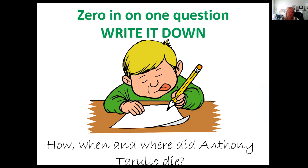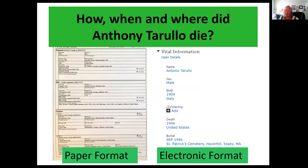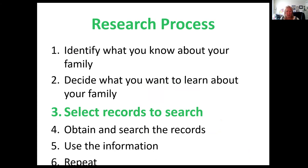I want to know how, when, and where did Anthony Tarullo die? It's a simple question and I wrote it out so I can stay focused on it. My goal is to find a source that answers the question — preferably two or three sources that corroborate the answer. The overall goal in family history work is to find at least one source for every fact we have on our family. So I have this information about Anthony from the book article, and it's important to write down what I know.